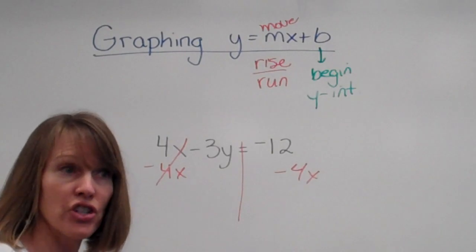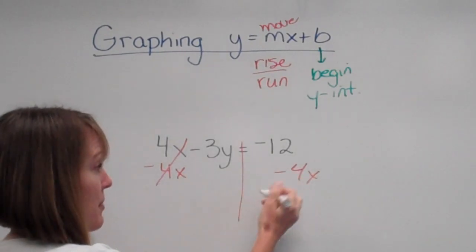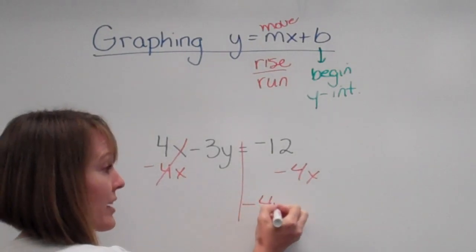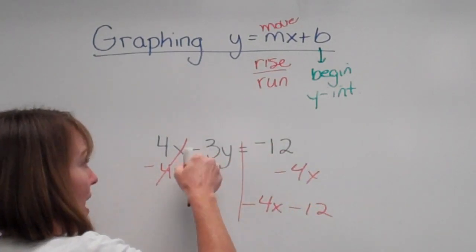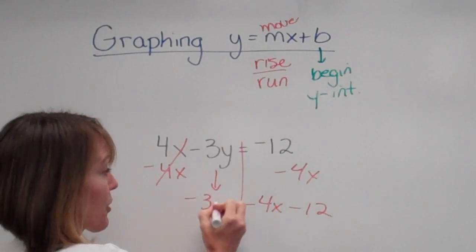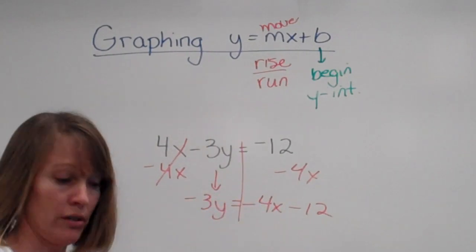So our x's is going to be first and our loner number afterwards. So that means I'm going to put my negative 4x first, and then my negative 12 here, and I bring down my negative 3y. That's what's left over.